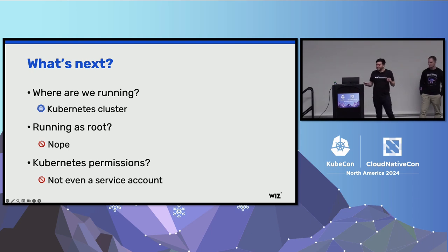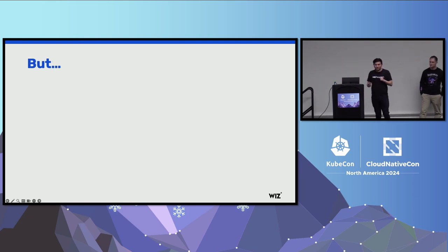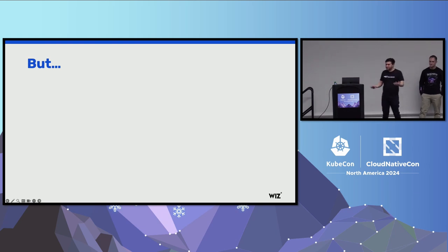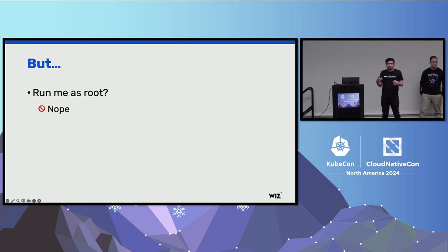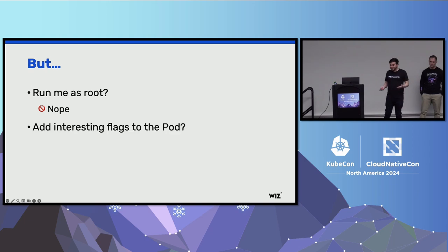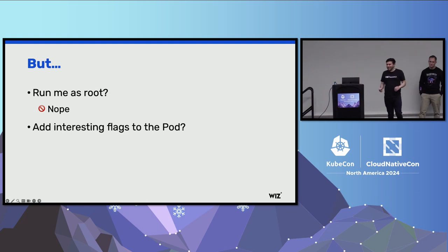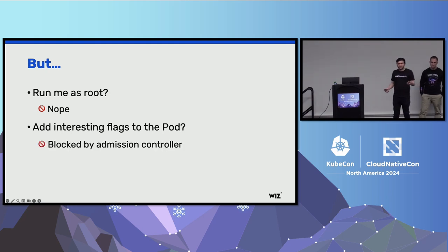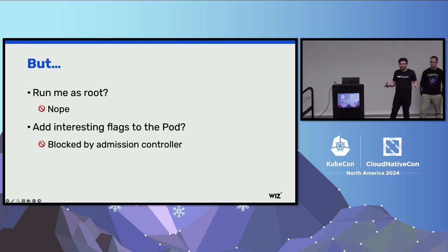However, we have an interesting advantage: we control the full configuration of our pod from start to finish. So we can try to modify the pod to feed our needs better. First order of business: run as root. However, that does not work — whenever we try to alter the configuration to set our UID to zero, we get blocked and our container won't allow itself to run as root. We tried many other interesting flags: making our container a privileged container, mounting a new network namespace, a new PID namespace, mounting a disk from the host — none of these things work. Every interesting flag we try gets blocked by SAP's admission controller. They have a very tight list of rules. So it seems like our compute is very limited, but this is still Kubernetes — there's an internal mesh network ahead of us. We tried to scan the internal network, but every request we sent got blocked by something — it turned out to be Istio.